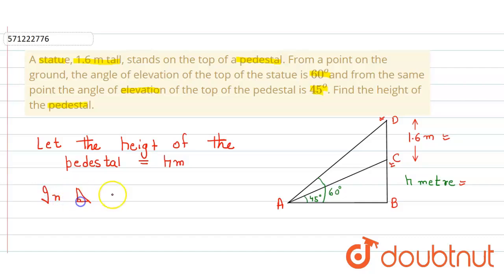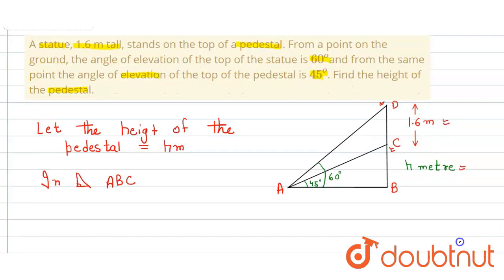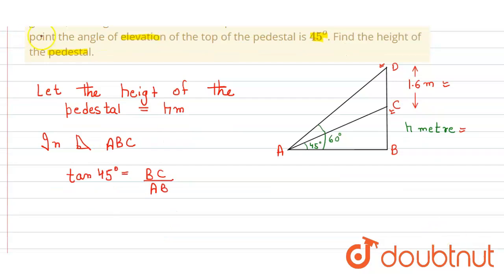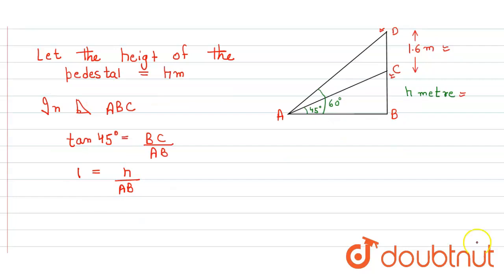We apply the trigonometric ratio in the right angle triangle ABC. We know that tan 45 degrees equals perpendicular BC upon base AB. Since tan 45 is 1, and BC equals h, we get AB equals h meters.